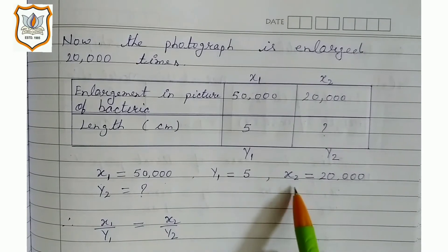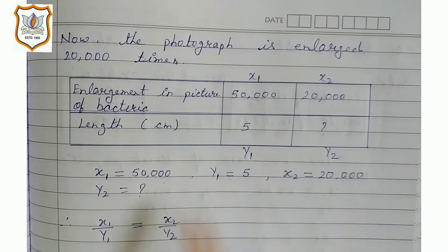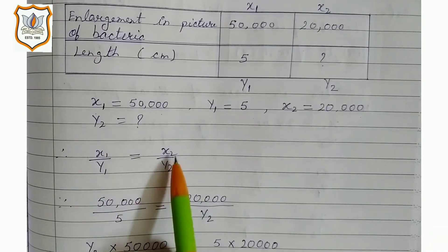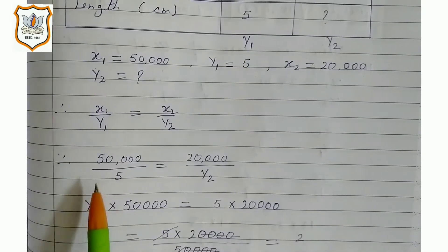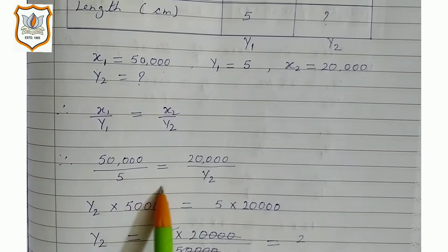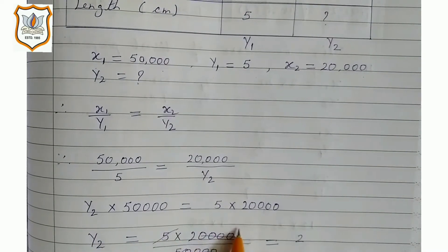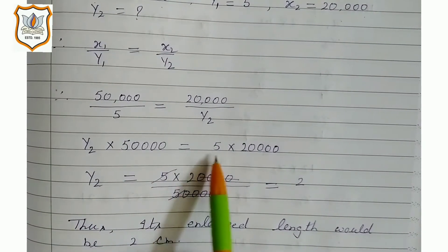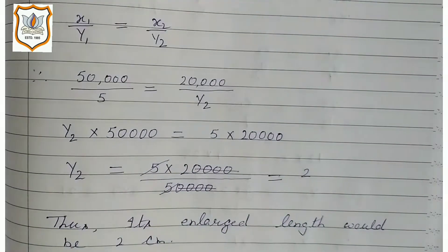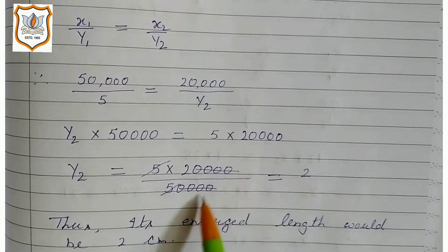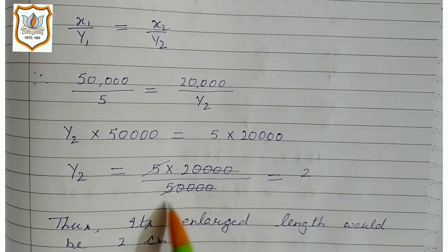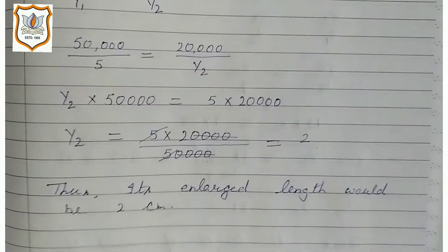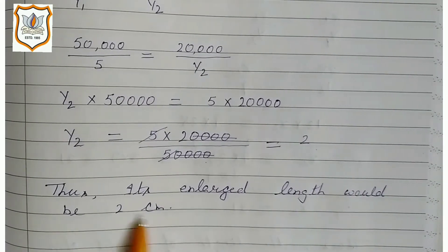x1 is equal to 50,000, y1 is equal to 5, x2 is equal to 20,000, find y2. Therefore x1 upon y1 is equal to x2 upon y2: 50,000 upon 5 is equal to 20,000 upon y2. Cross multiply: y2 × 50,000 is equal to 5 × 20,000. Cancelling zeros and simplifying, y2 equals 2. Thus its enlarged length would be 2 cm.